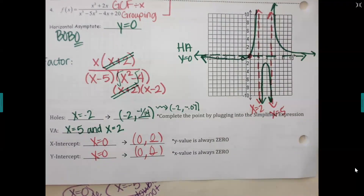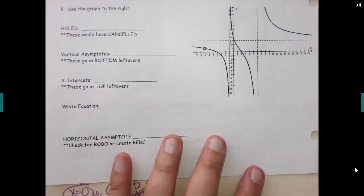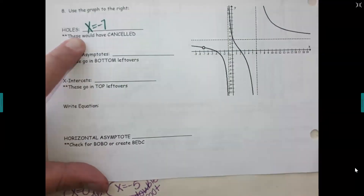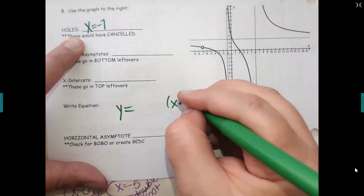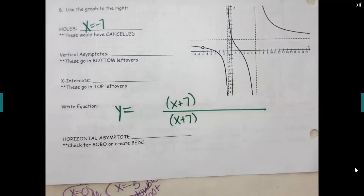Some of y'all are really struggling, so let's move to the last page and then go to practice. Numbers seven and eight — you're writing equations but you have the features in the picture. Starting with number eight: can you identify where the hole is? If x equals negative seven is a hole, what would the factor have had to say? Close — x plus seven. Where would it be in the equation — top, bottom, or both? Both, because holes have to be in both parts or they couldn't have crossed out.